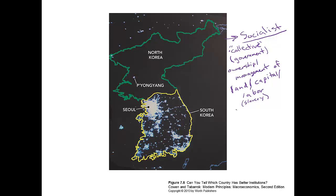Even if you attributed the noblest of intentions to the communist dictators — and if you know anything about the North Korean regime, that's not true at all — even if they did mean well, without private ownership you have no prices and no markets. You have no feedback to tell people what is the best use of a resource right now. What crop should you be growing on your farmland? Should your land even be farmland? Should you build houses, a factory, or a highway on it? You have no guidance on those decisions because you're lacking prices.